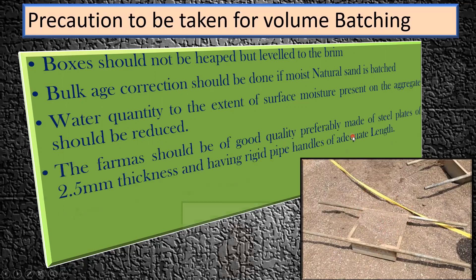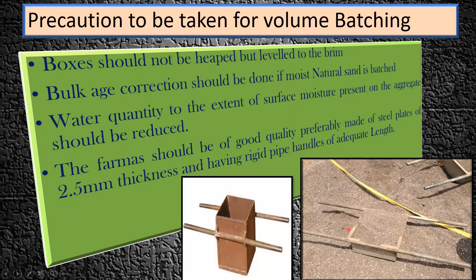Fourth, the firma boxes should be of good quality. They can be made of steel plates of 2.5 mm thickness with rigid pipe handles of adequate length so they can be carried easily. These are the precautions that need to be taken during volumetric batching.